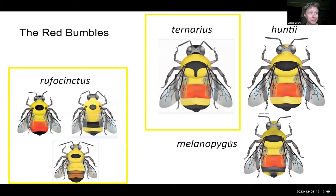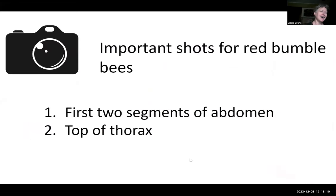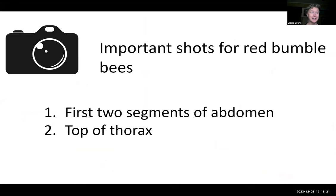There's a bunch of different species we call the 'red bumblebees' — bees that typically have some red color on them, more so than the rusty patch which has a kind of rusty patch. These will have more like bright orange or red hairs, and some can be really tricky. The red-belted bumblebee is one that has a lot of different color patterns. Again, it's a repeating theme where those first two segments of the abdomen are really helpful to distinguish these different species, as well as the top of the thorax.